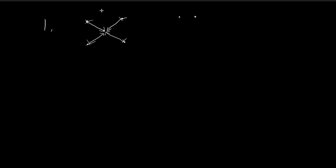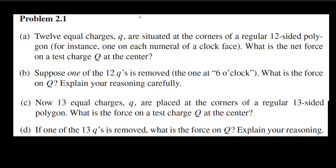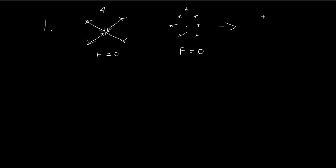I can extend this argument. For the case of six charges, you can once again see that the opposite charges cancel out, so the net force is also equal to zero. You can keep extending this argument for larger setups, provided that the number of charges is even — we need an even number so we can pair them off. So in the case of 12 charges, the same argument applies: you pair the charges off, and the net force is equal to zero.